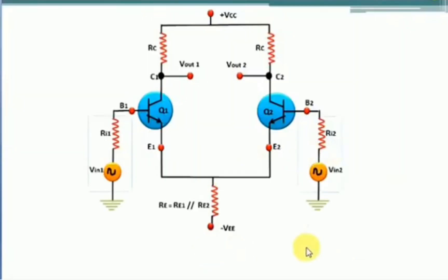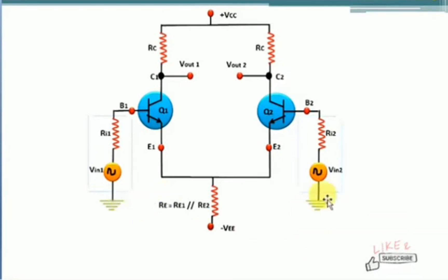This is the circuit designed using the basic differential amplifier. From this circuit, we are going to see the types or configurations of the differential amplifier. The types of the differential amplifier can be decided depending on two parameters. One parameter is how the input signals are applied, and the second parameter is how the output response is taken.